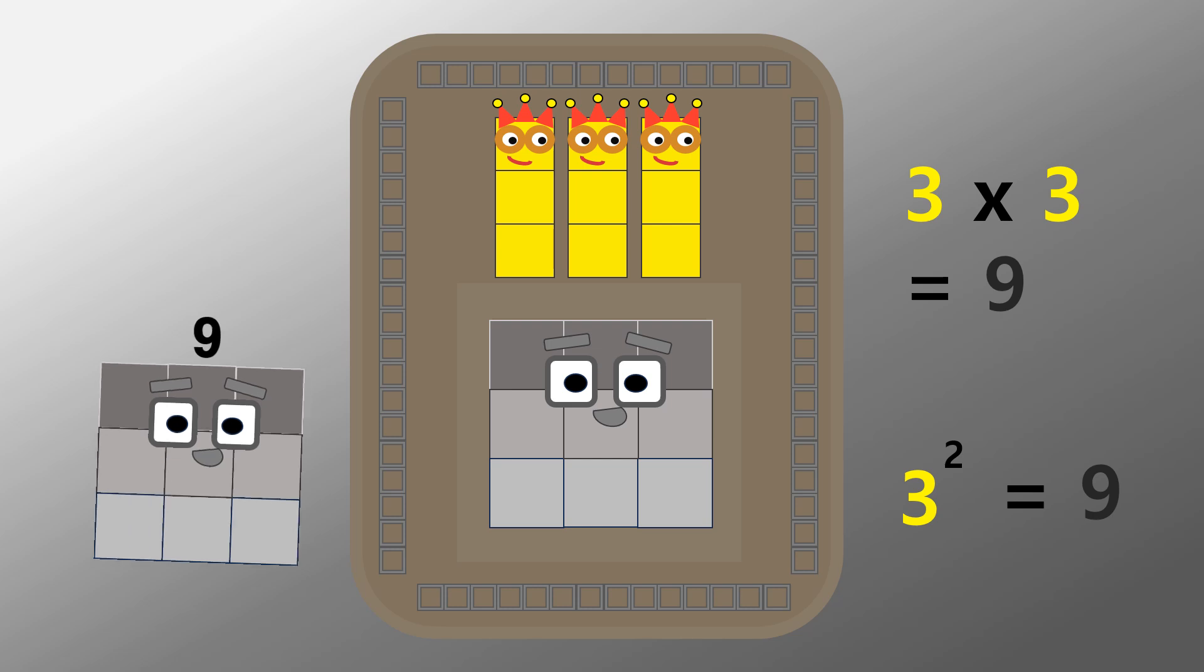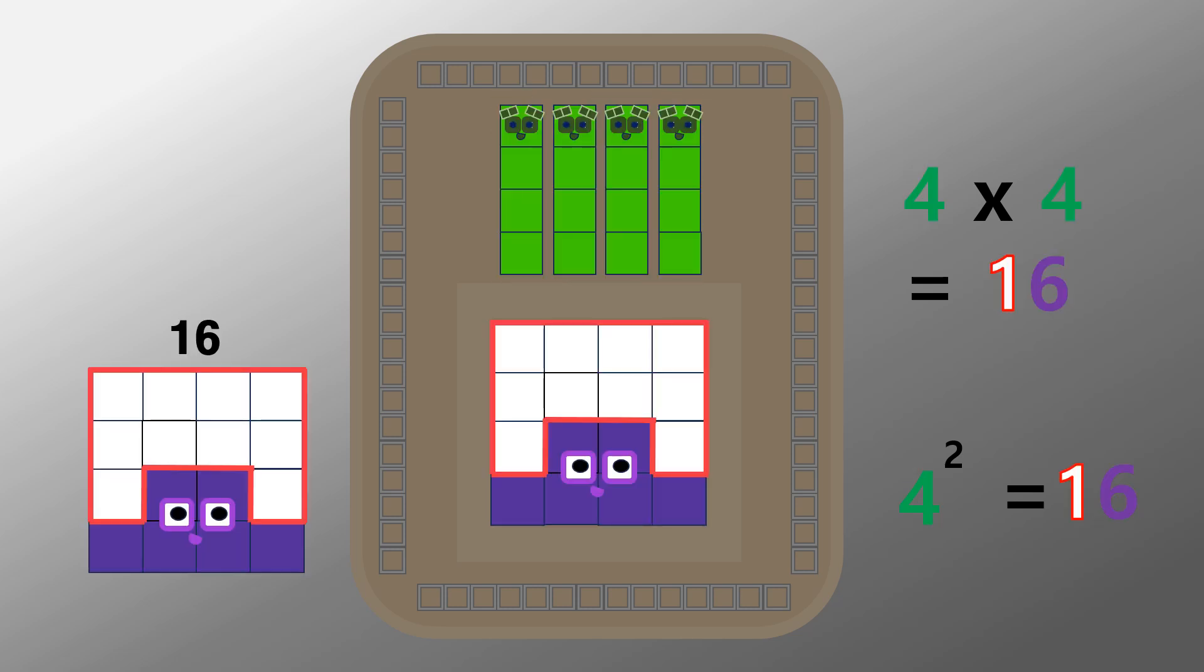I am nine. Three by three. Three across by three down. I am sixteen. Four by four. Four across by four down.